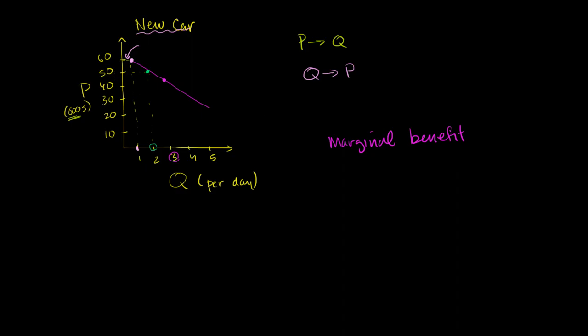Here, we're measuring the marginal benefit in terms of price. But price really can be viewed as a foregone opportunity. If you spend $40,000 on this car, you're making the decision not to spend $40,000 on something else, a down payment on a house,